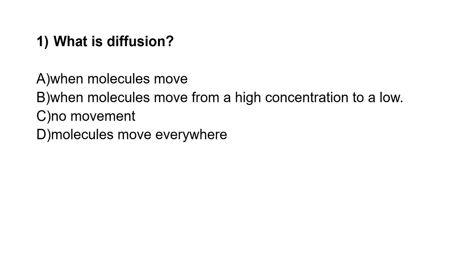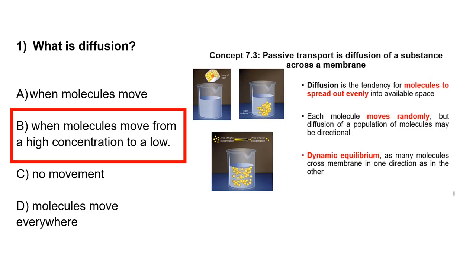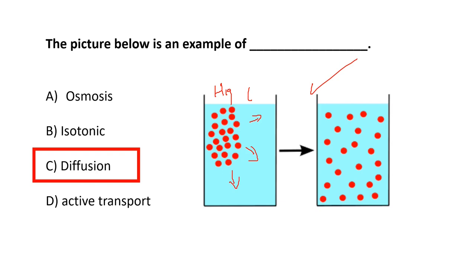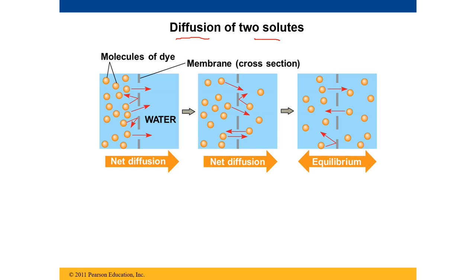Diffusion is when molecules move from an area of high concentration to low concentration to achieve dynamic equilibrium. The picture shown is an example of diffusion — molecules spread from high to low concentration until equilibrium is reached.